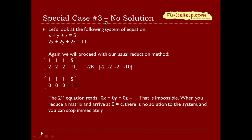Another special case is when there's no solution. We proceed with the usual row reduction method, converting to matrix form and getting a leading 1 for row 1, then clearing the column by multiplying row 1 by negative 2. Adding side by side, row 2 becomes 0x plus 0y plus 0z equals 1 — which is impossible. When you reduce a matrix and arrive at 0 equals some non-zero constant C, there is no solution to the system, and you can stop immediately at that point.